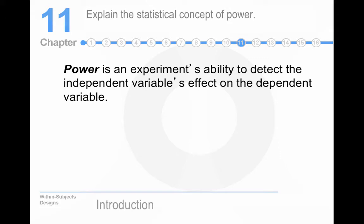What is the statistical concept of power? It's the ability to detect the independent variable's effect on the dependent variable. In terms of hypothesis testing, it's our ability to reject a null hypothesis that is in fact false, which is what we want to do in our experiment. We want to be able to correctly reject the null hypothesis, and statistical power allows us to do that.